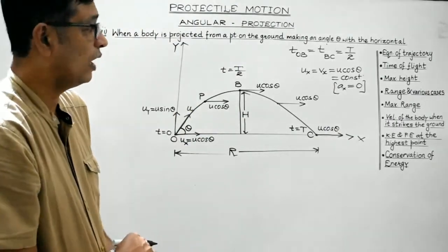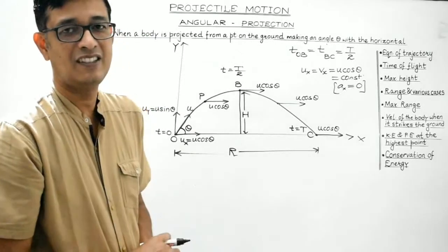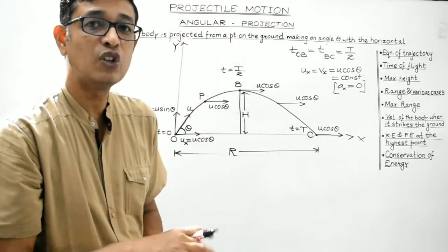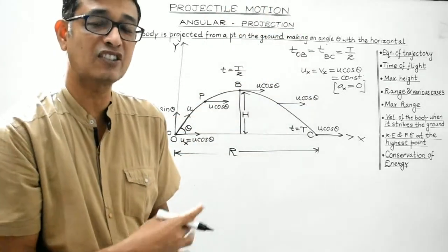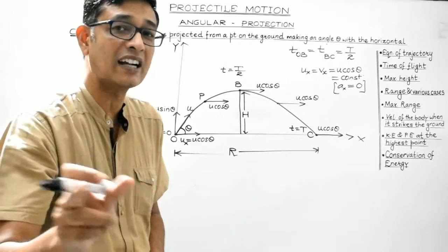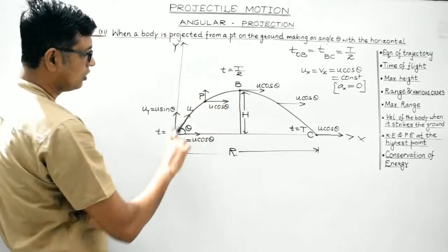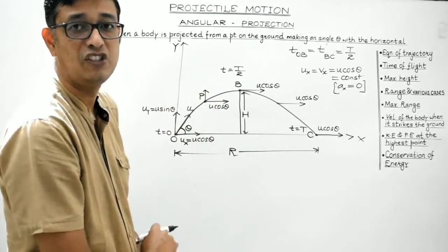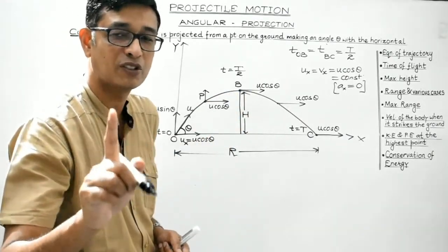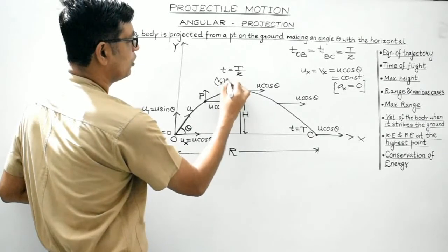A projectile also has vertical motion under the influence of gravity. When it is going upward, it experiences a = −g, and when coming downward, a = +g. The vertical component of velocity keeps changing continuously at a constant rate g. When going upward, its vertical component decreases. At the highest point — this is very important — the vertical component of velocity of a projectile is zero.